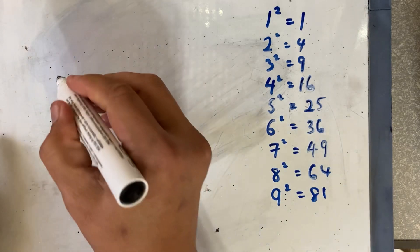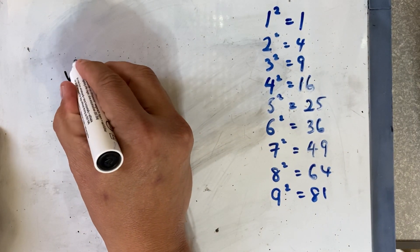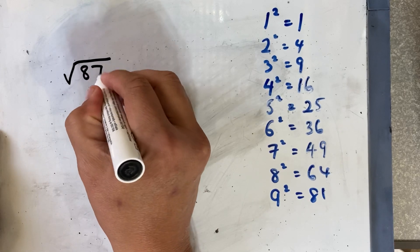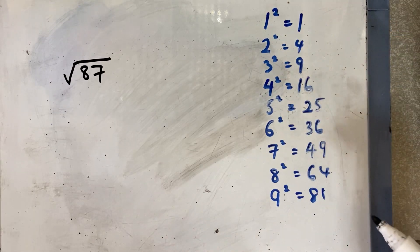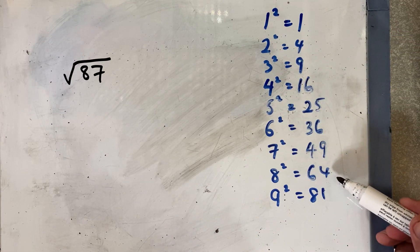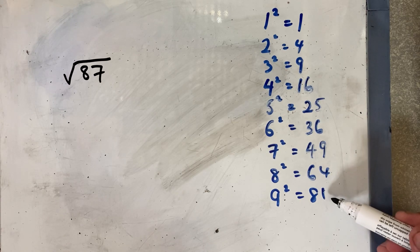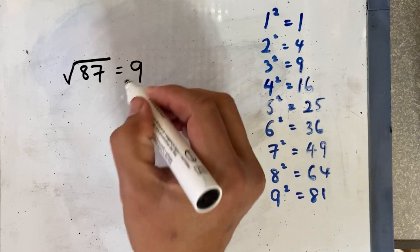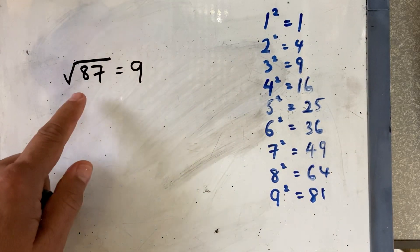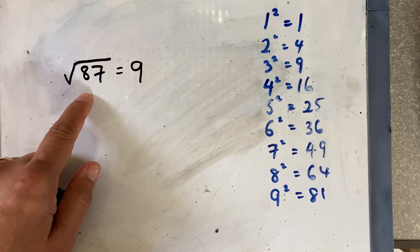Okay, the first example is the square root of 87. Before you estimate the square root of 87, you need to find the closest perfect square. The closest square is 9, so 9 squared is 81, and you have a remainder of 6.